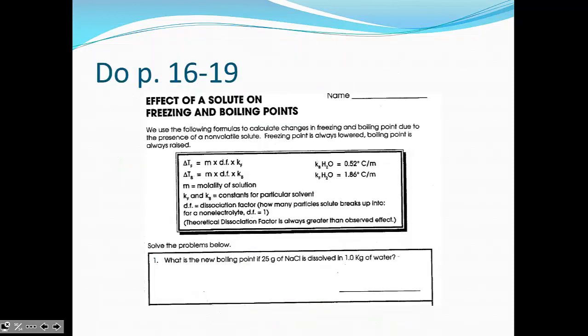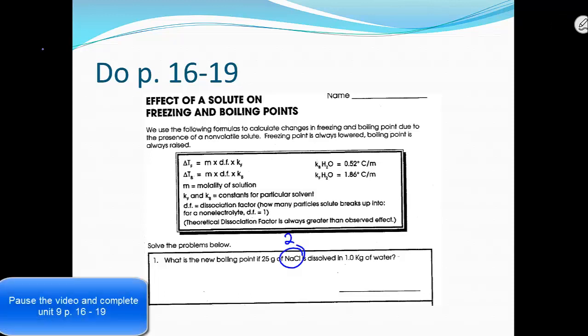With that, you can practice this on pages 16, 17, and 18 in your packet. Remember, non-electrolytes have a Van't Hoff factor or DF of 1, while all electrolytes, you'll need to separate your metals from your non-metals. So for sodium chloride, the Van't Hoff factor is 2.